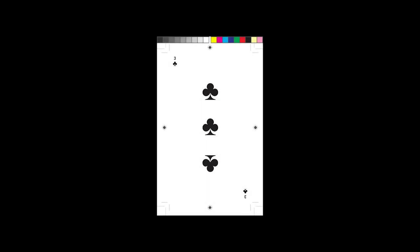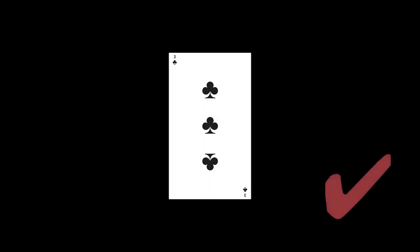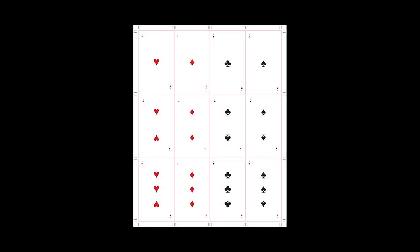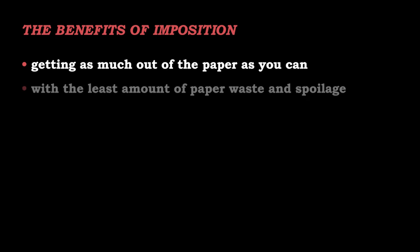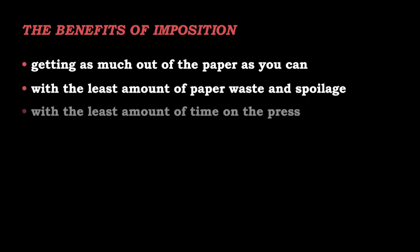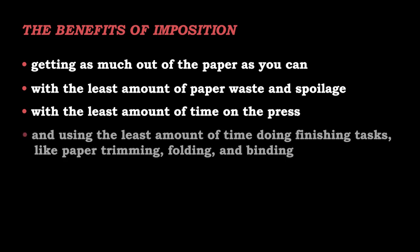Compositing software takes your single-page PDF with no crop or registration marks and lays those pages out so the entire press sheet can be printed, folded, bound, and cut with fewer steps — but it all still ends up with the pages in the correct reading order. This compositing process is why, for our workflow, we ask that you not submit PDFs as spreads or with any registration marks or color bars at all. These spreads won't be placed correctly because of the additional page information, and they're unnecessary because the printer's marks on the entire sheet are all taken care of by the imposition software. Imposing multiple pages on a larger sheet of paper has a lot of benefits: you're trying to get as much out of the paper as you can, with the least amount of waste and spoilage, the least amount of time printing on the press, and the least amount of time spent on cutting, binding, and other finishing tasks.